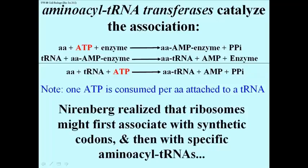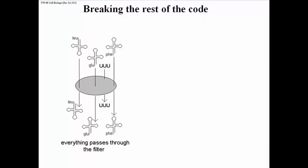Back to Nirenberg. He realized that ribosomes might be induced to associate with synthetic mRNAs as short as 3 bases — in other words, he might be able to show ribosomes associating with literally a codon, a 3-base polynucleotide. And if that were possible, he might be able to show which codon enabled which aminoacyl tRNA to attach to a ribosome.